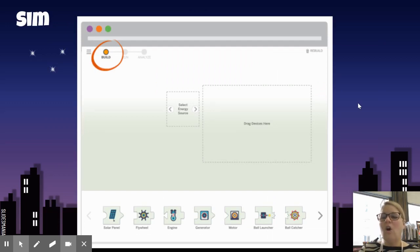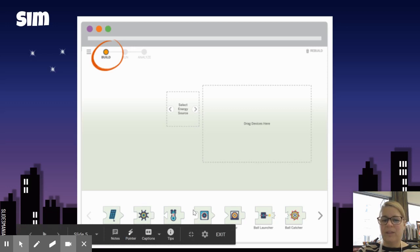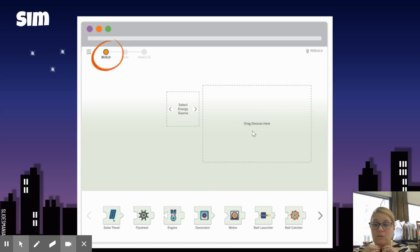Once you're in there, this is what you're going to see. Hopefully, you'll see an orange dot in the word build. That means you can build a simulation. The first thing you need to do is choose an energy source. If you click right in this box here, you can click through a variety of energy sources. You have the sun, you have the wind, you have a crank, and you have fuel. And I want you to try all of them. Once you've done that, you can drag from the bottom these different devices up into this box that says drag devices here. So maybe I'm going to start with the wind, and I want to drag an engine up. If it will click on to your energy source, you know it can work with it. If it won't click on, then you need to choose a different device.